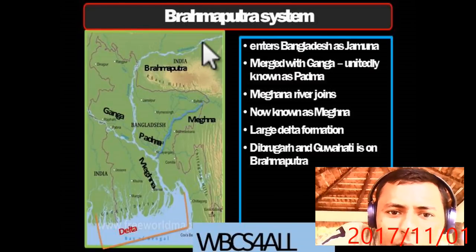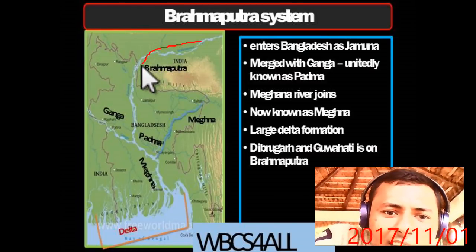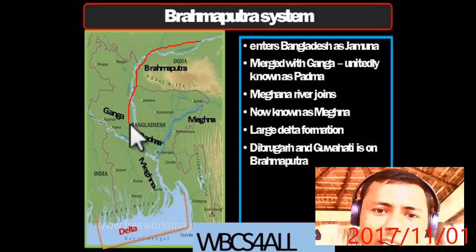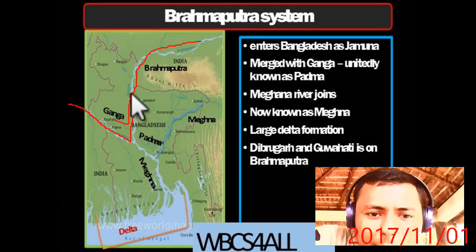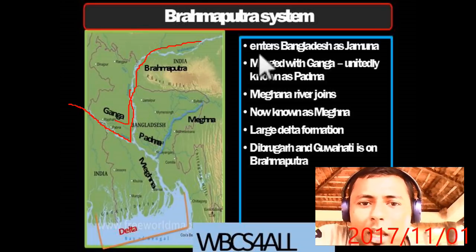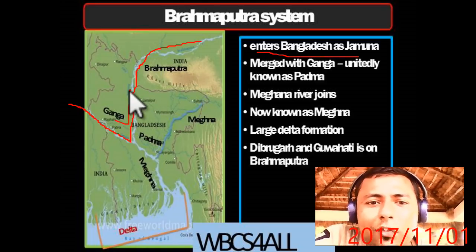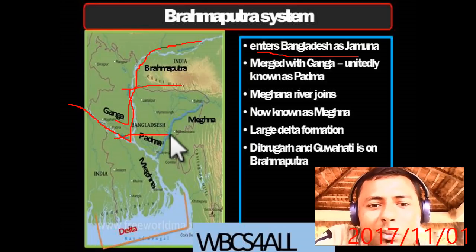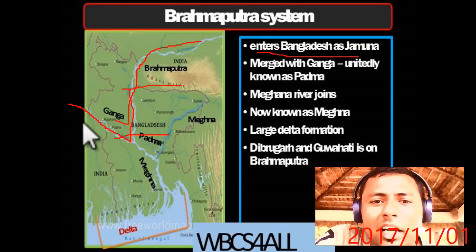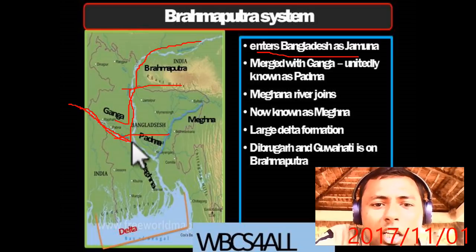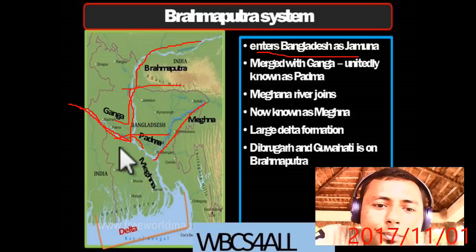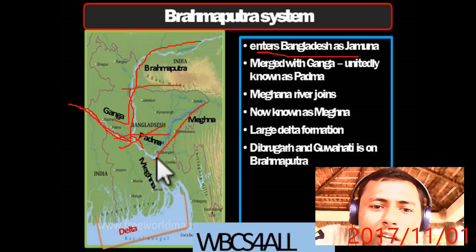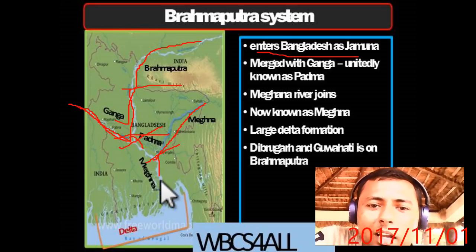The Brahmaputra then enters Bangladesh. Ganga enters through West Bengal. In Bangladesh, the Brahmaputra is known as Jamuna. When Jamuna merges with Ganga, the combined flow is known as Padma. Then one more river, Meghna, comes from Bangladesh and meets there — from that confluence onwards it is known as Meghna.